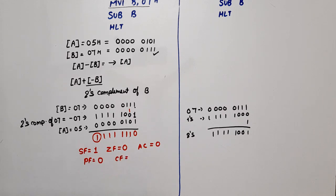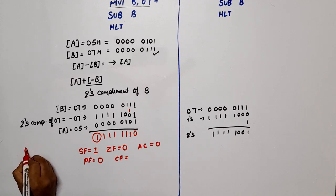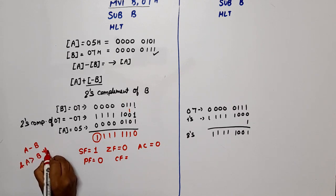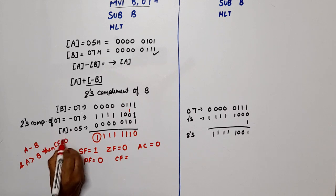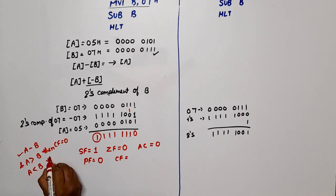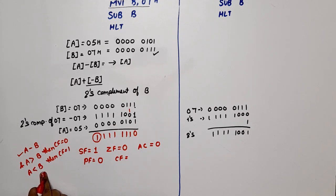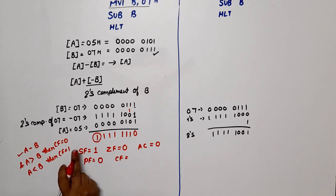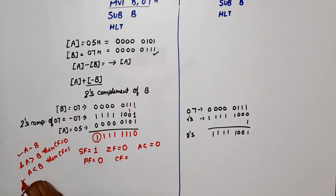Now for the carry flag: although a carry is generated in the binary addition, in the subtraction case we apply the rule — if A minus B and A is greater than B, CF will be 0; if A is less than B, CF will be 1. Here A's value is 5 and B's value is 7, so A is less than B, therefore CF is 1.